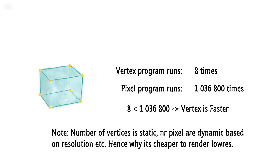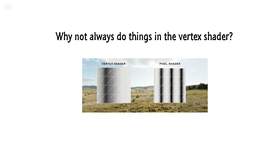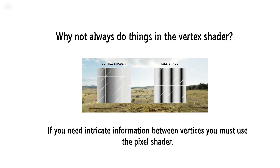It's safe to say that doing things in the vertex shader is much cheaper, as the program needs to run far fewer times. One good thing to note is that while the number of vertices is always the same, the number of pixels is dynamic based on rendering techniques and resolutions — hence why it's sometimes faster to render things in low res. So why don't we always do things in the vertex shader? It's not always possible to get a result that's good enough. If you need intricate information between vertices you must do it in the pixel shader.